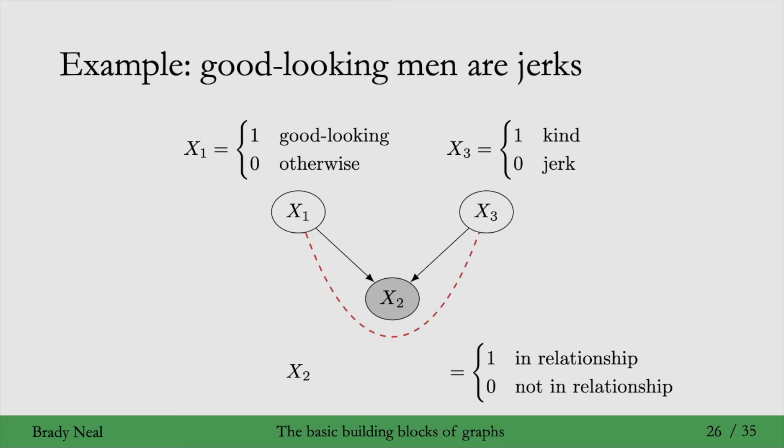And x2 will be whether or not you're in a relationship. So, x2 is 1 if you're in a relationship, and 0 if you're not in a relationship. And the specific function for x2 is an and.